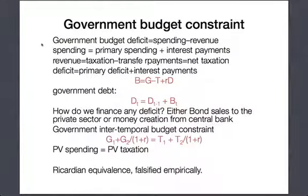The government, like every other economic actor, has a budget constraint. Its budget constraint essentially says it can only borrow some amount B, which is just G minus T — the difference between government expenditure and taxes — plus R, the real interest rate, times D, which is government debt. That debt level is about 170 billion euros right now. The debt evolves according to the following difference equation: D_T, the debt at time T, is just the debt in the previous period plus the amount you issue in bonds, B. Those two things map out a simple differential system with a lot of interesting dynamics.